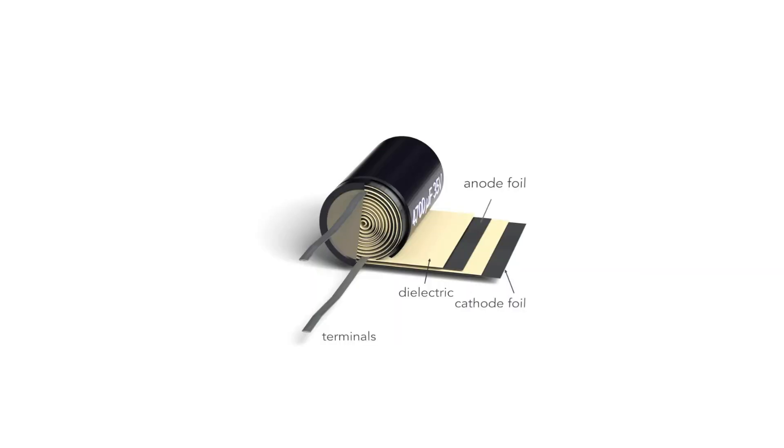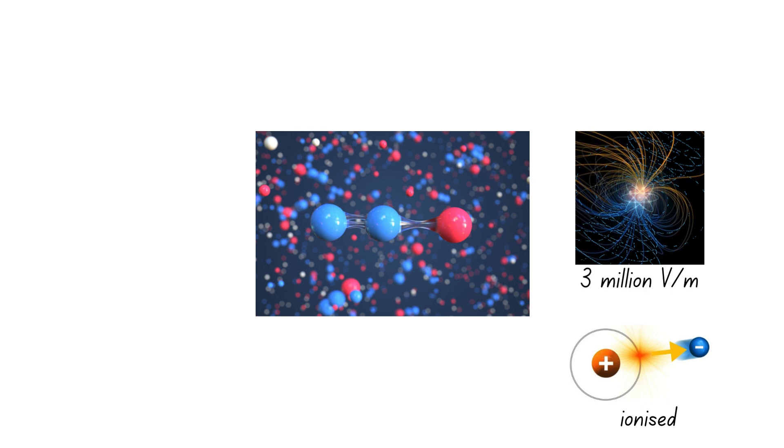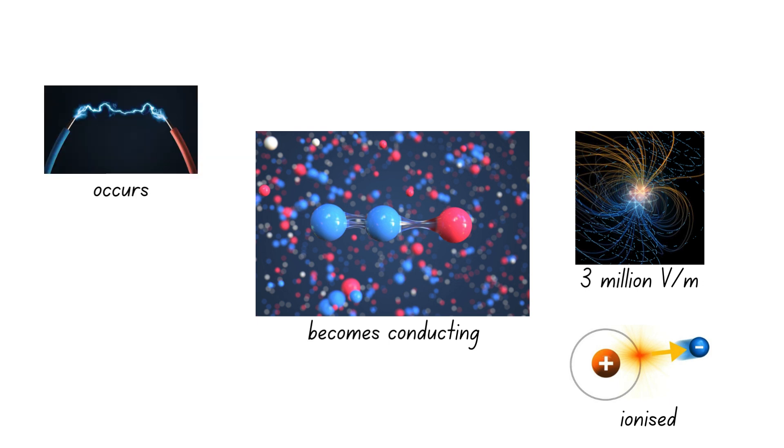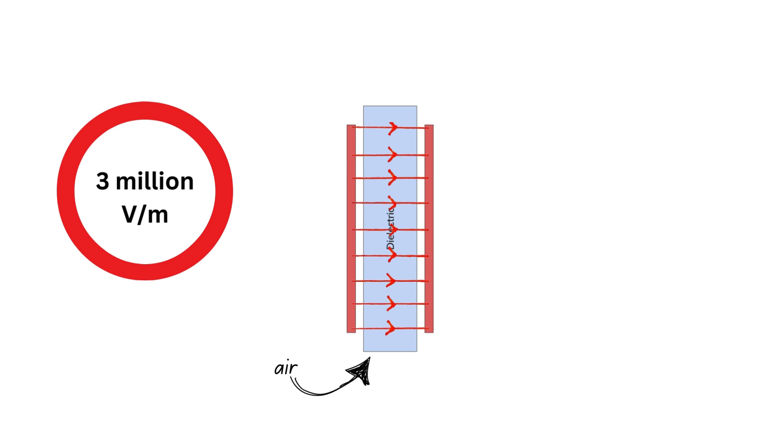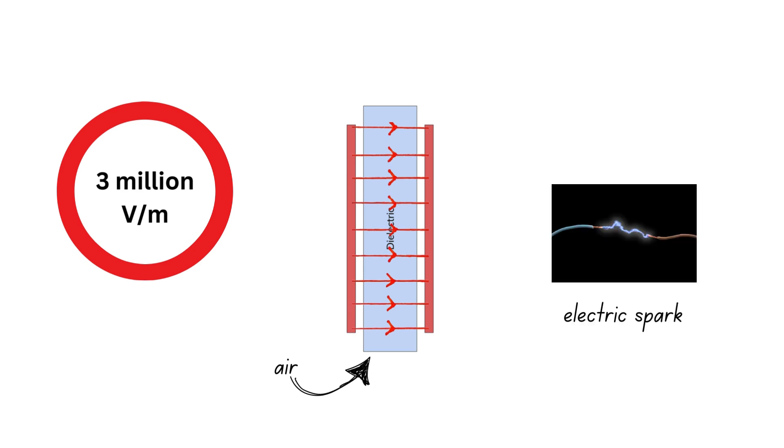Dielectric material also affects capacitance. Let us take air for example. Air molecules get ionized when they are subjected to an electric field of roughly 3 million volts per meter. This causes air to become conducting and causes a spark to occur. So, when air is used as a dielectric, the electric field that builds up between the plates must not exceed 3 million volts per meter, because at this point, a spark will occur between the plates, discharging them in the process.